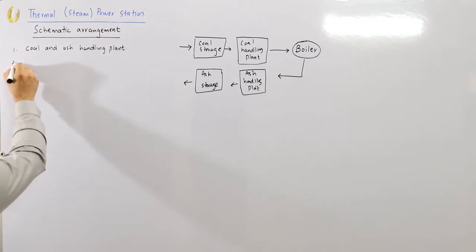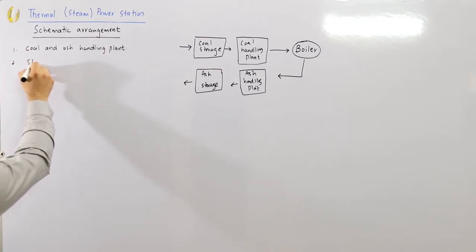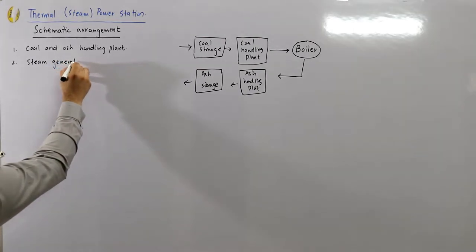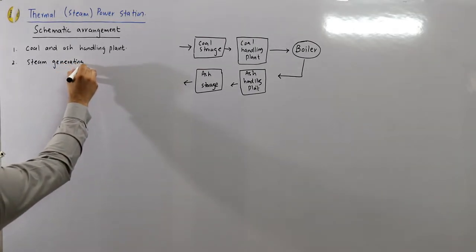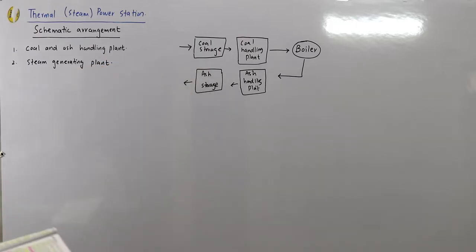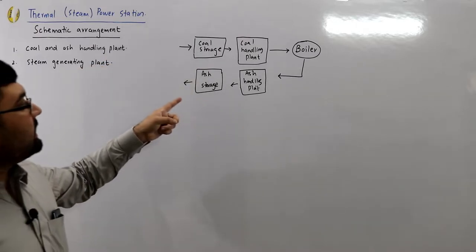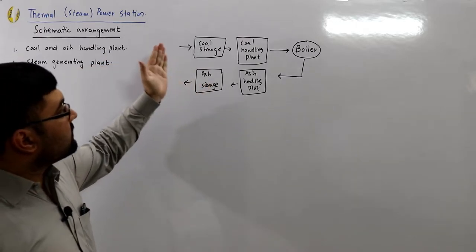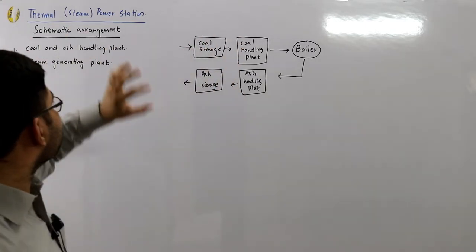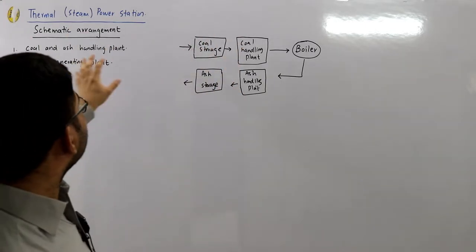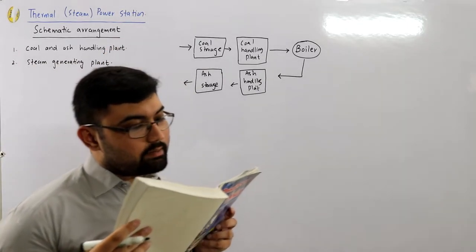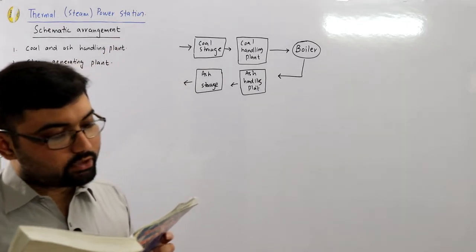Number two is the steam generating plant. This includes the boiler for the production of steam and auxiliary equipment for the utilization of flue gases — which are the gases produced during combustion.